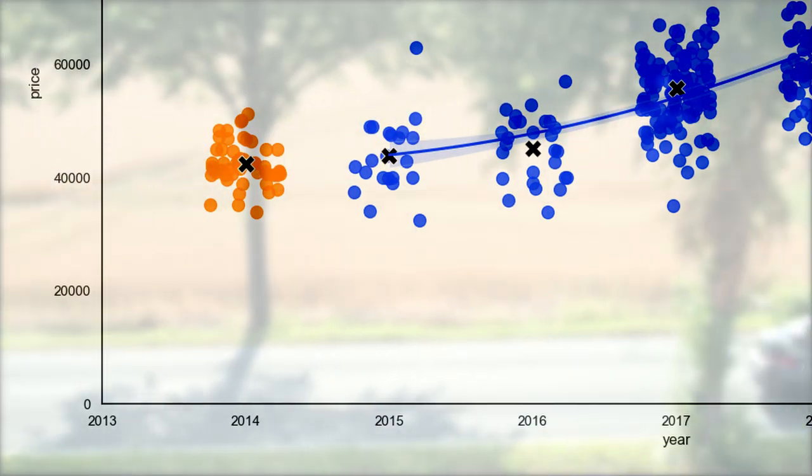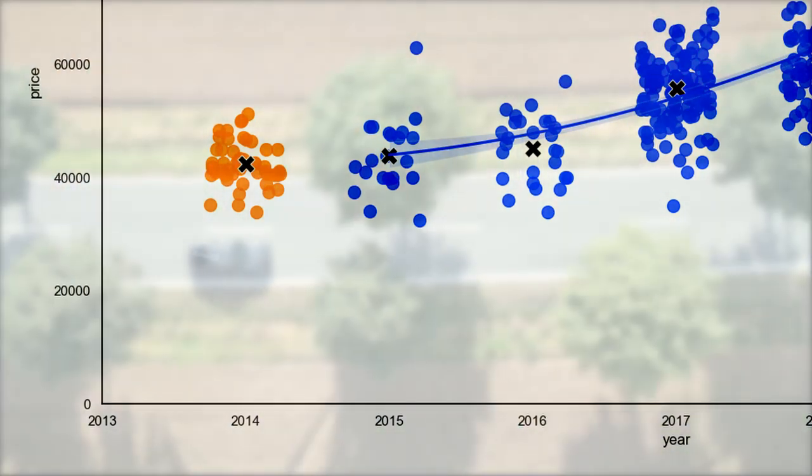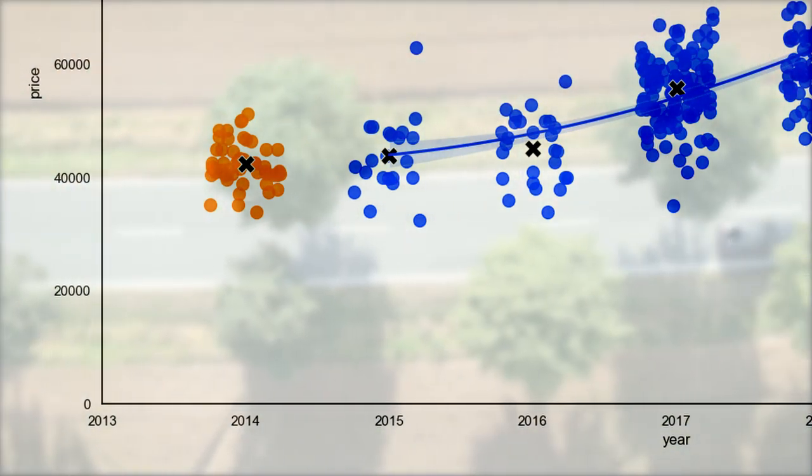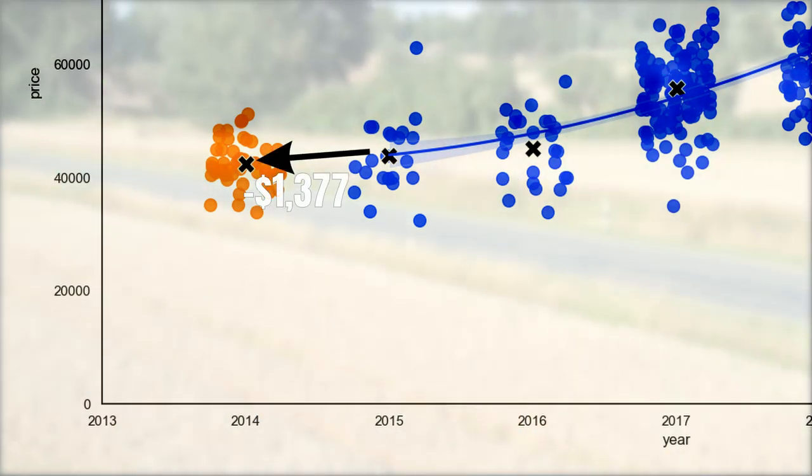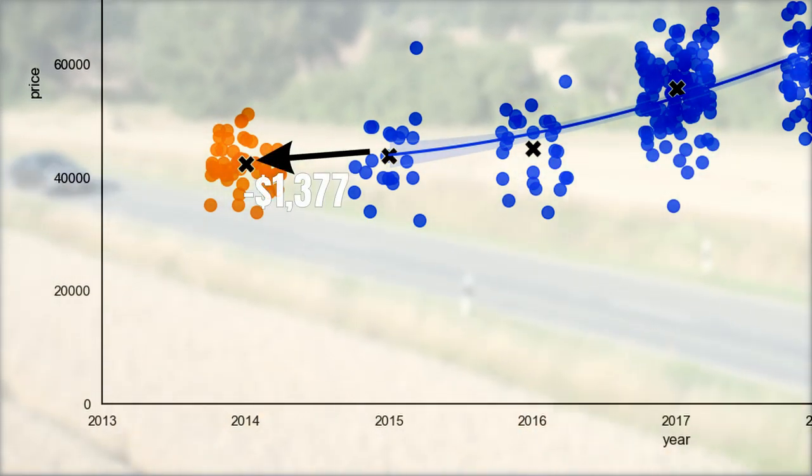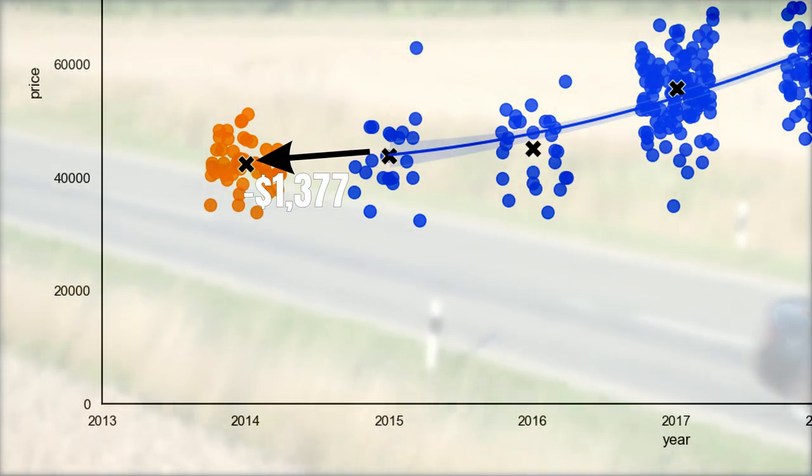If we however take them all together and look at the average price point, which is indicated by the black X, then we can see that compared to 2015, the cars are valued $1,377 lower.